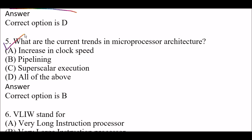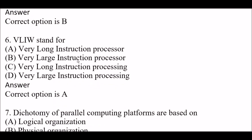Next question: what are the current trends in microprocessor architecture? Option A, increase in clock speed; option B, pipelining; option C, superscalar execution; option D, all of the above. The right answer is option B, pipelining. Pipelining is the current trend in microprocessor architecture.